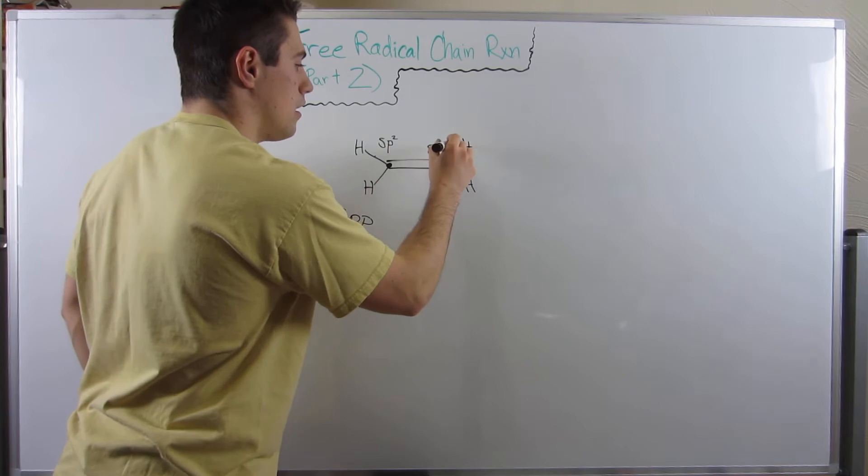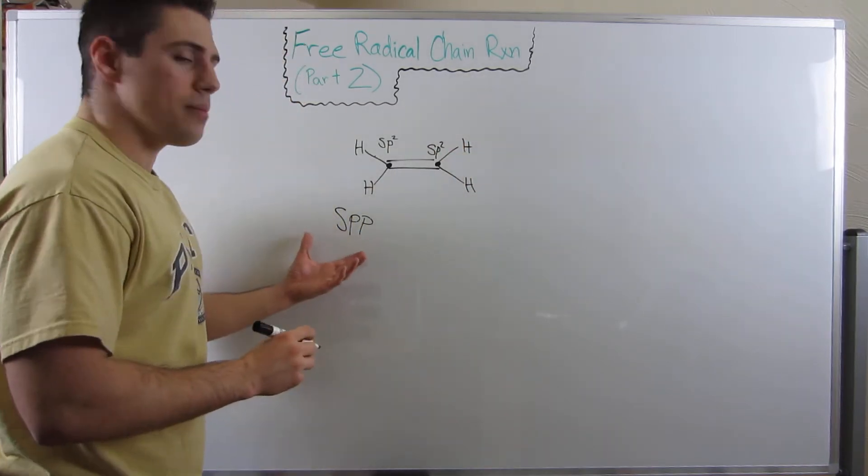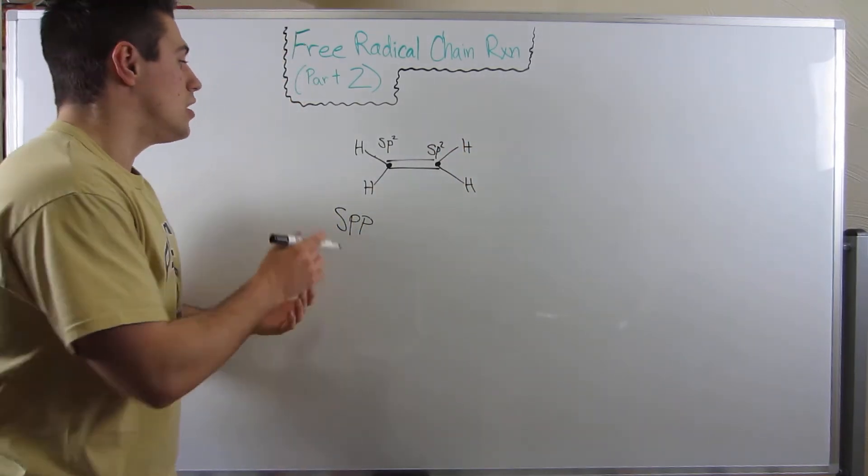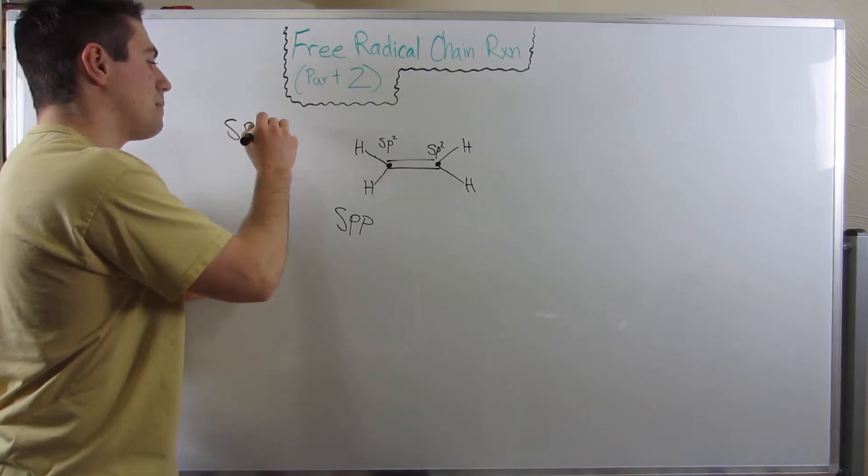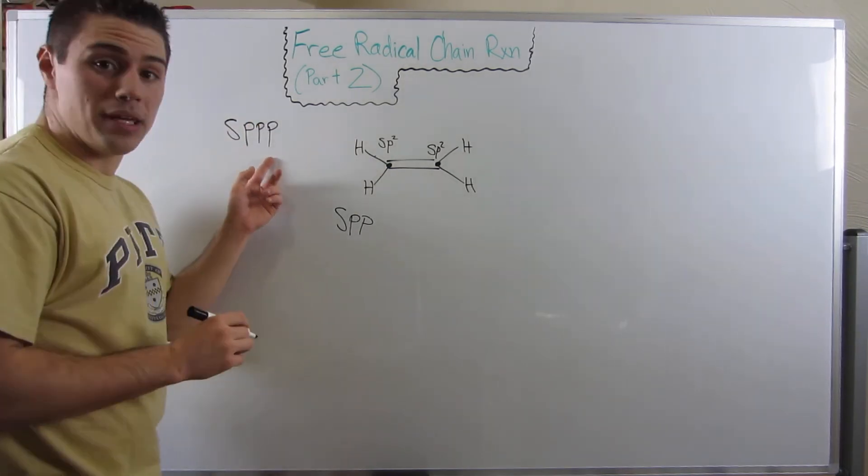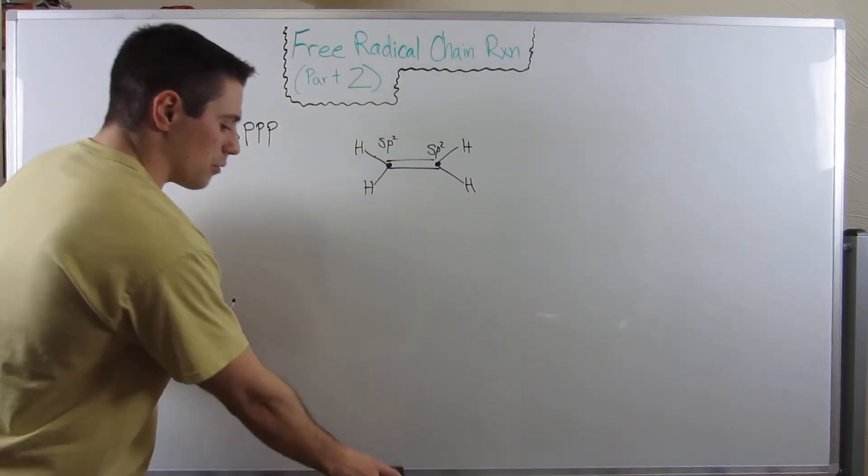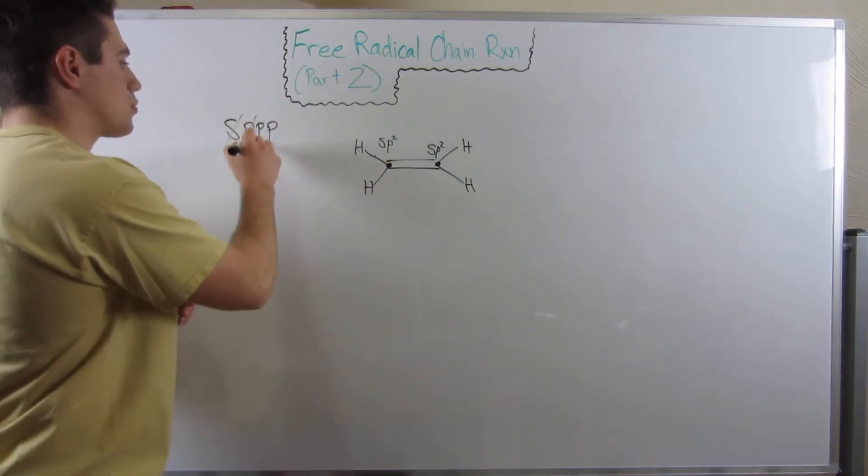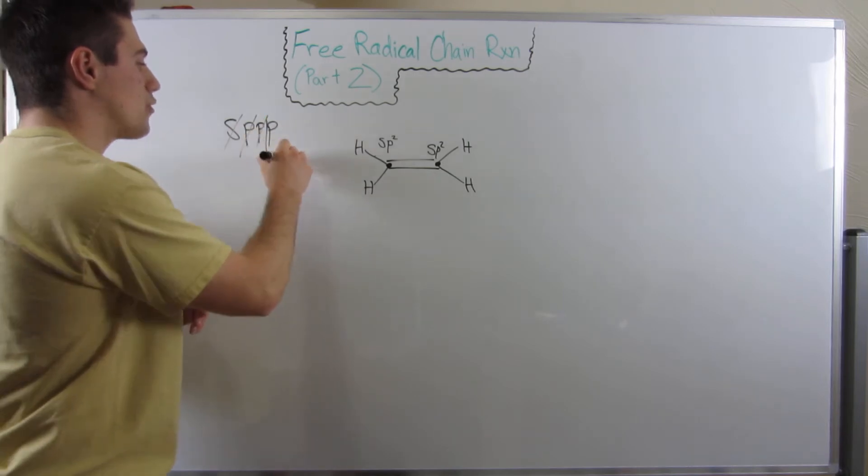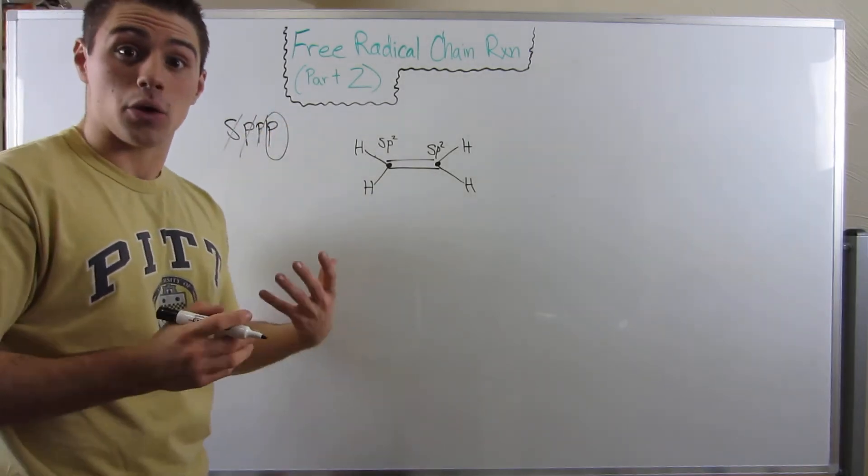This carbon, as well as this carbon, they are both SP2 hybridized. You notice that when we were assigning hybridization, we have all of these orbitals at our disposal: an S and three Ps. So if something's SP2 hybridized, we use this orbital, this orbital, this orbital, we are left over with an unhybridized P orbital.